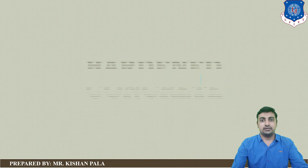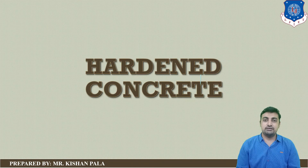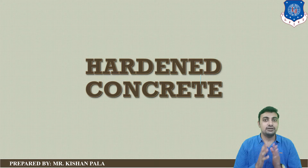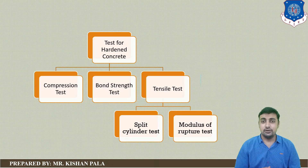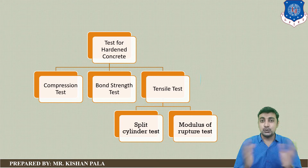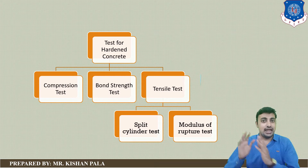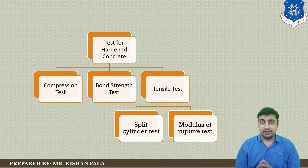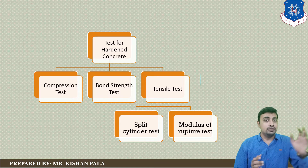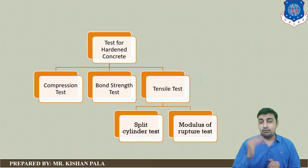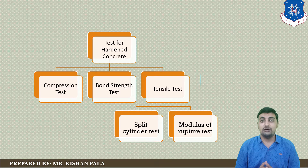Hello viewers, in this session we will find the hidden properties of the concrete mass. As we know, we have mainly two types of strength in concrete: compressive strength and tensile strength. We earlier found out the compressive strength of the concrete mass; now we will find the tensile strength of the concrete mass.